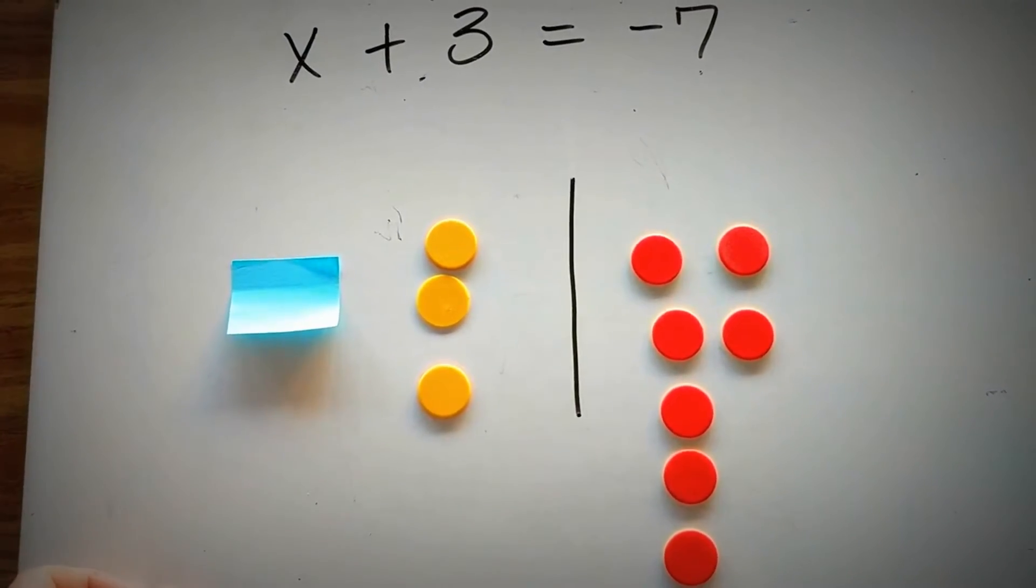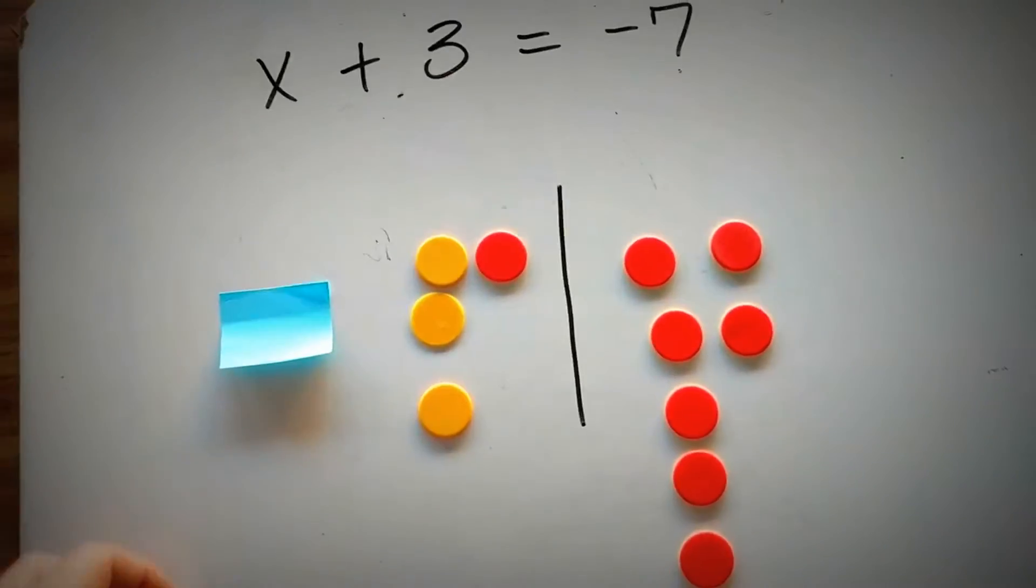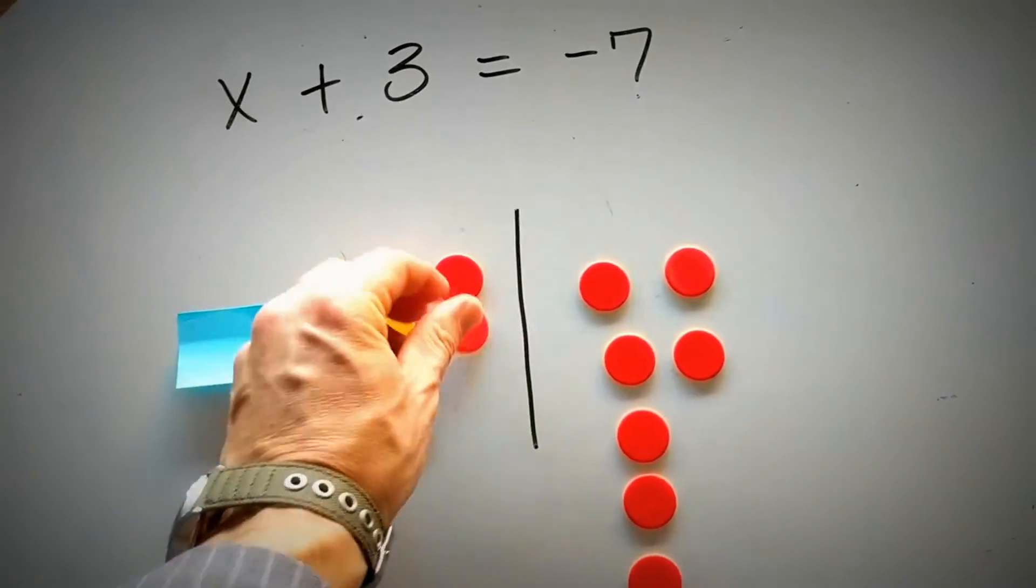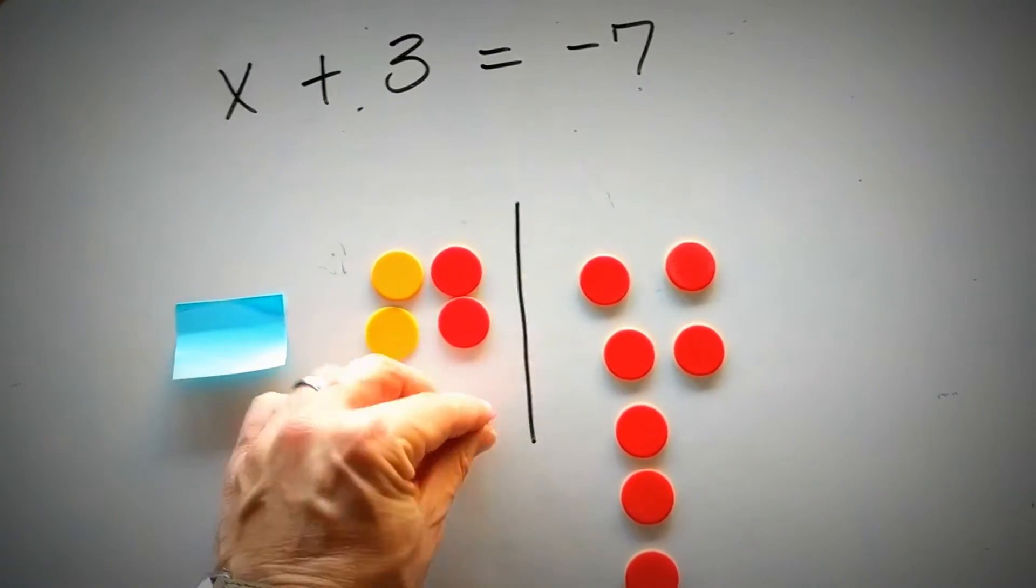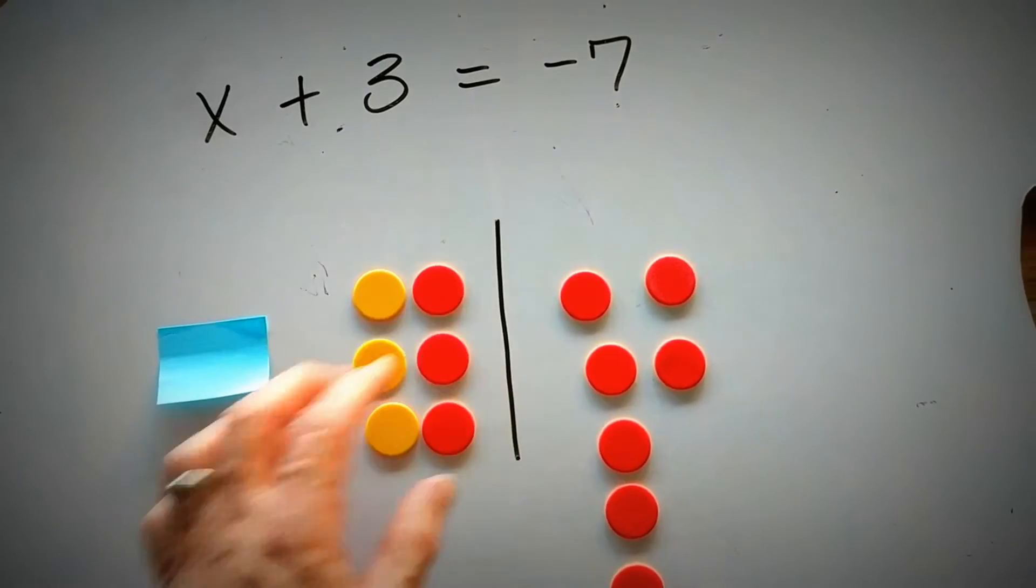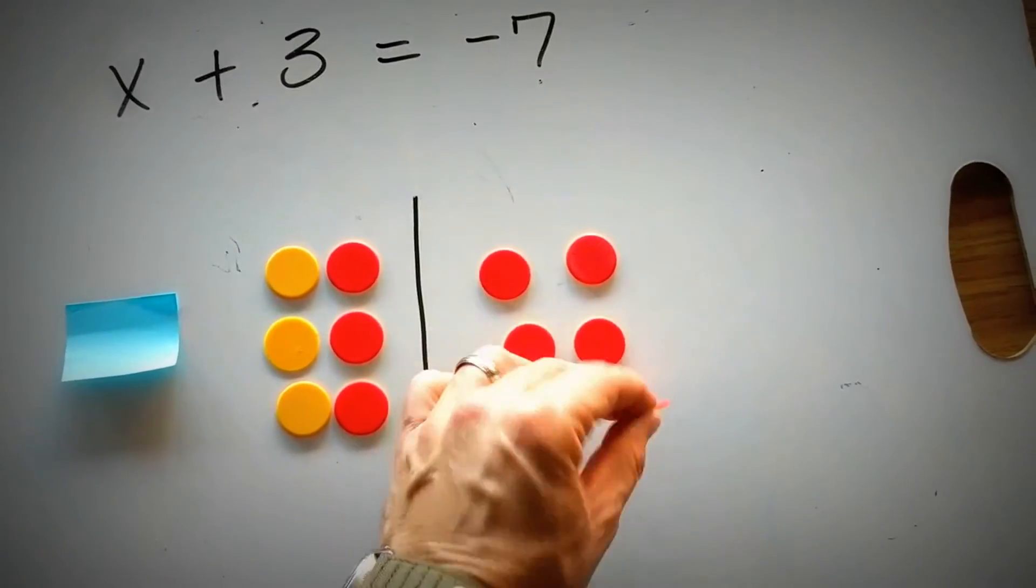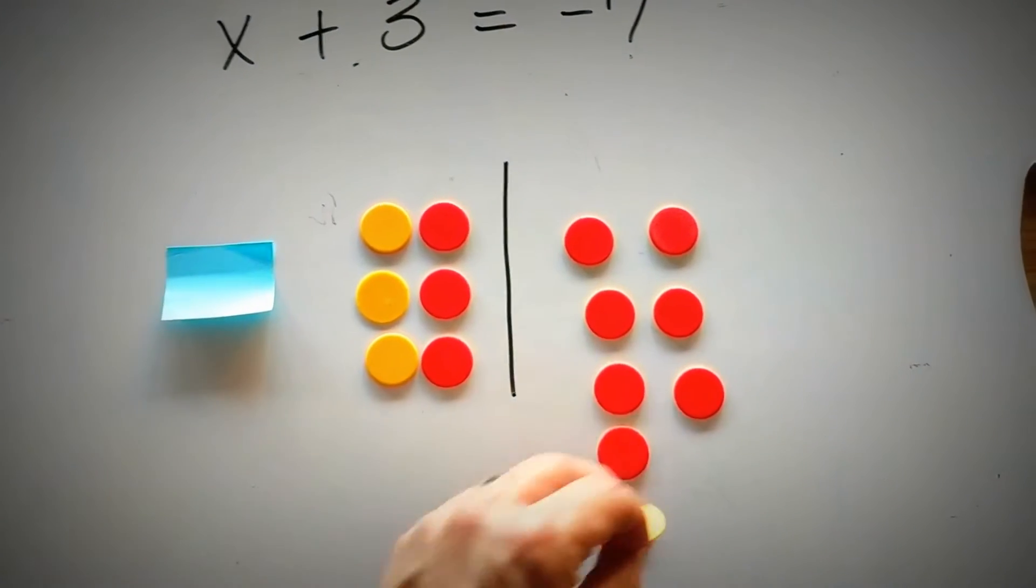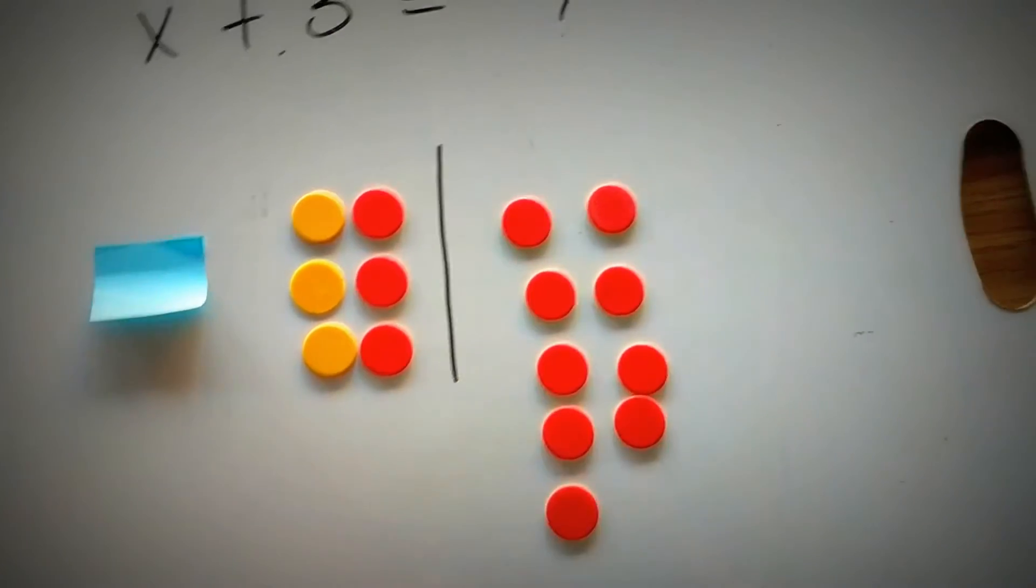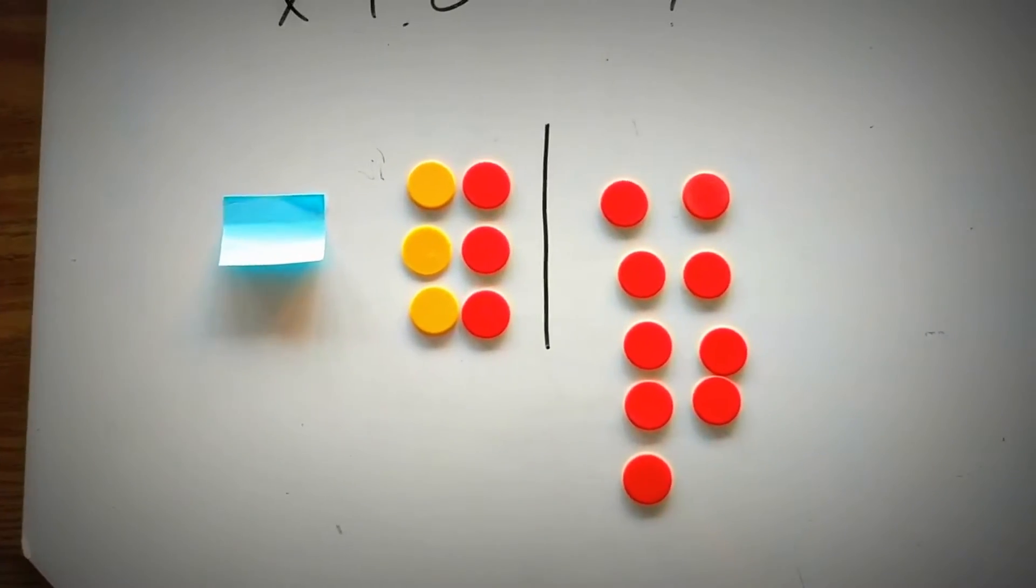The way I'm going to do that is I'm going to use zero pairs. So I'm going to include the negative zero pairs on not only the left-hand side, but also the right-hand side. So I added 3 negative to the left, and I need to add 3 negative to the right.